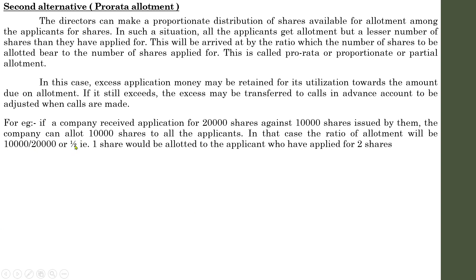On the basis of this ratio, shares are allotted to the subscribers. Any excess amount received will be adjusted in the allotment or first call or second call. In usual cases, any excess will be adjusted in the allotment, because excess is received at the time of application or first installment and adjusted in the subsequent installment, that is allotment.